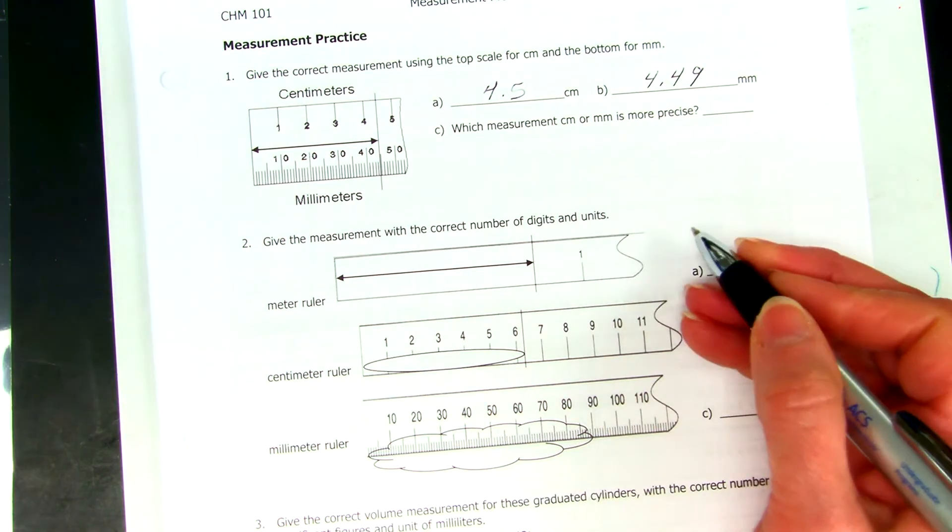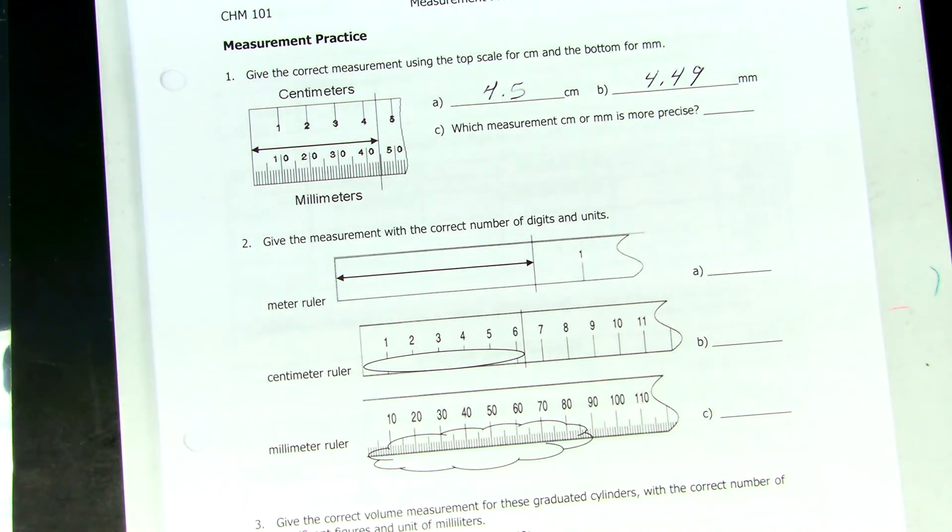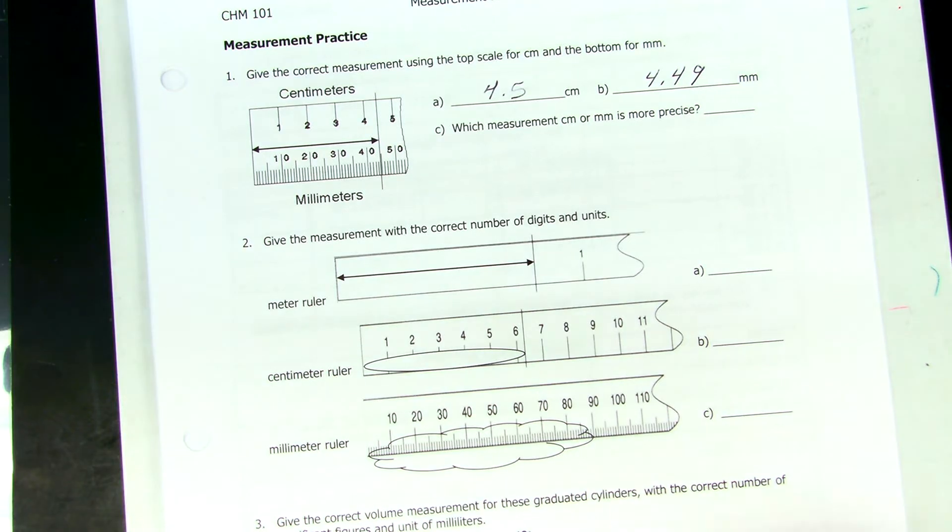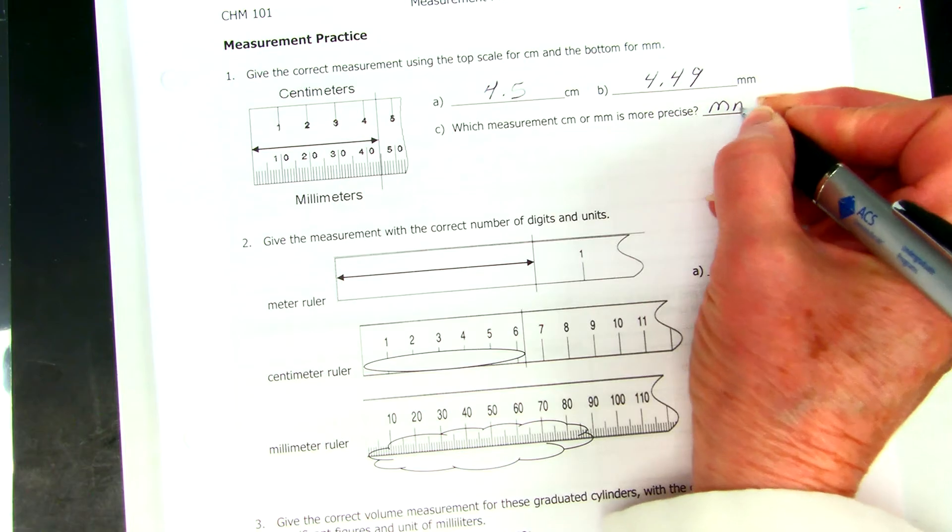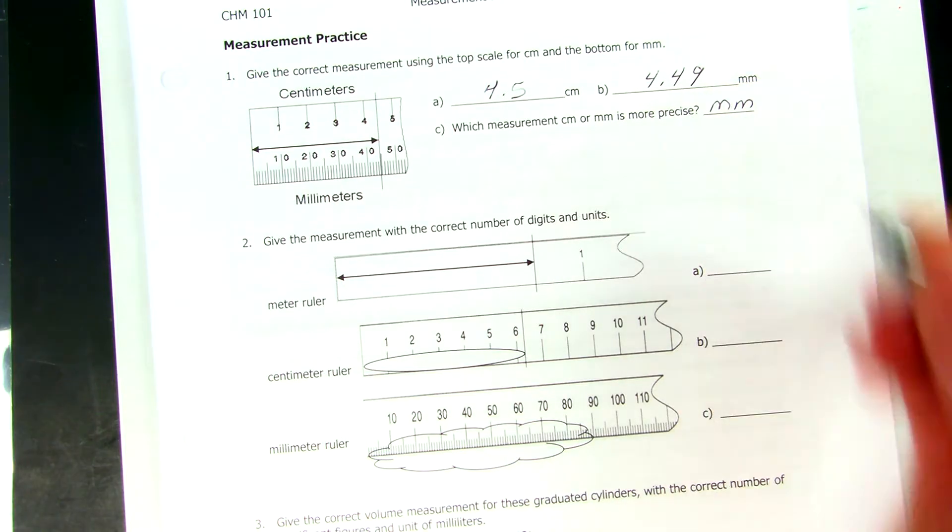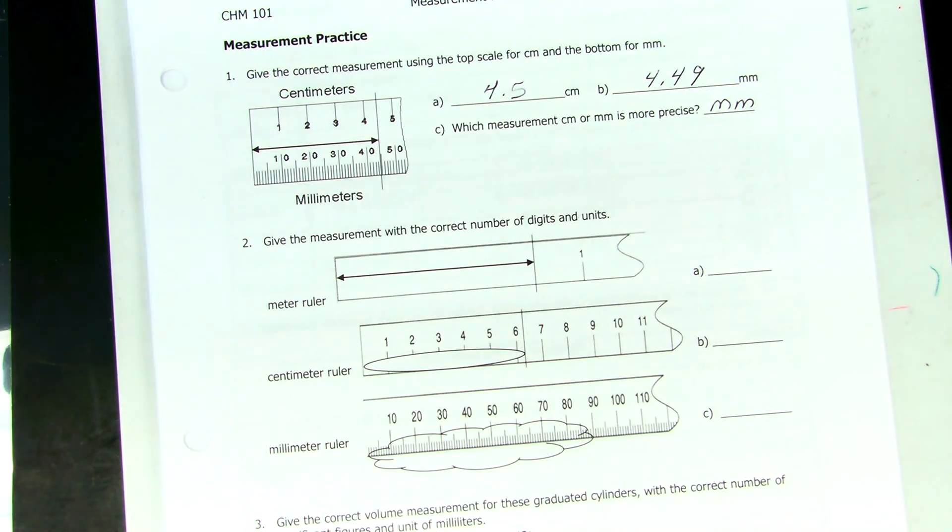So, which is more precise, the centimeters or the millimeters, McKaylee? Millimeters is correct because we get more digits. The more markings we have when we're reading between the lines, the more precise we are with more digits.